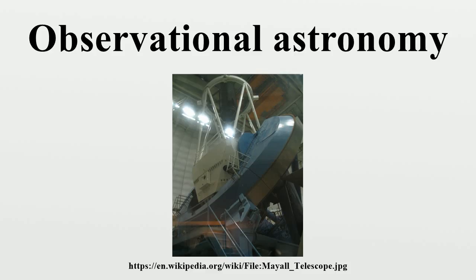A vital instrument of observational astronomy is the spectrograph. The absorption of specific wavelengths of light by elements allows specific properties of distant bodies to be observed. This capability has resulted in the discovery of the element helium in the Sun's emission spectrum, and has allowed astronomers to determine a great deal of information concerning distant stars, galaxies, and other celestial bodies. Doppler shift of spectra can also be used to determine the radial motion or distance with respect to the Earth.